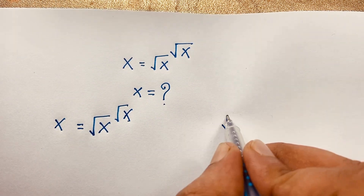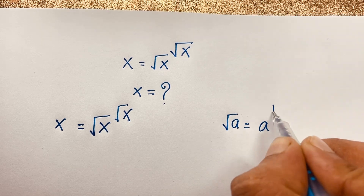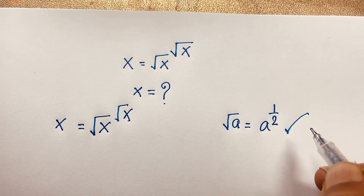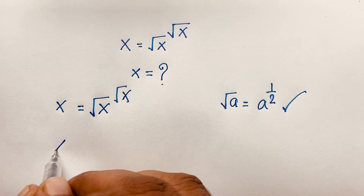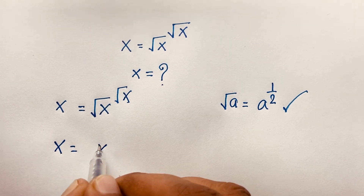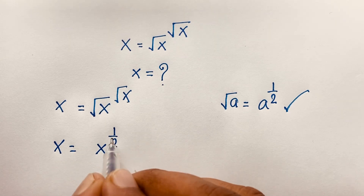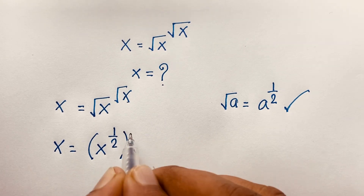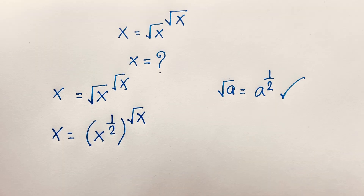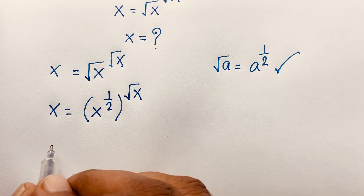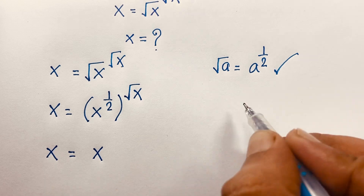We know that square root of n is equal to a to the power 1 over 2. So if I follow this case, I can see this expression: it will be x is equal to x to the power 1 over 2 — meaning this square root x becomes x to the power 1 over 2 — and whole to the power square root x. So you can see this expression.